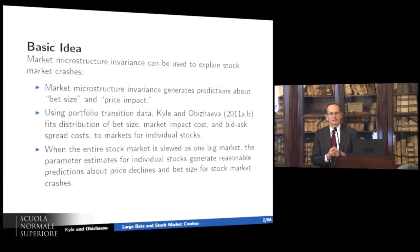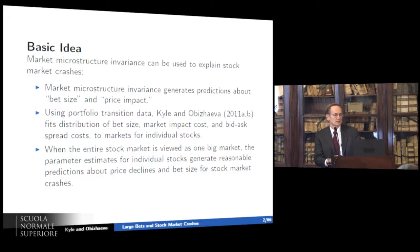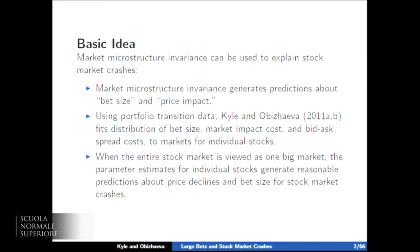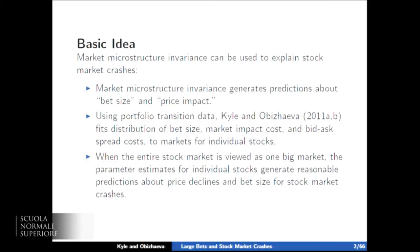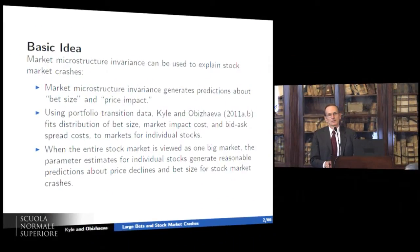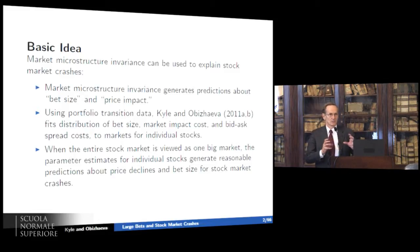Market microstructure invariance is an idea — really an empirical hypothesis — that we think might be applicable to many different markets: stock markets, bond markets, foreign currency markets, though we've focused our research on stock markets. It predicts how what we call bet size — which you can think of as order size, or in terms of speculation, the size of the position that people take — varies across markets.